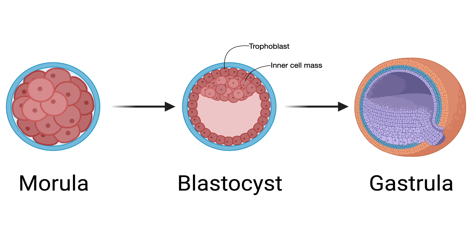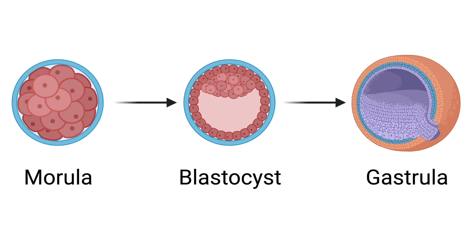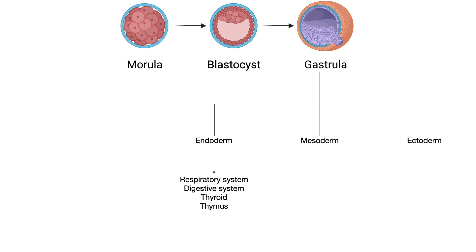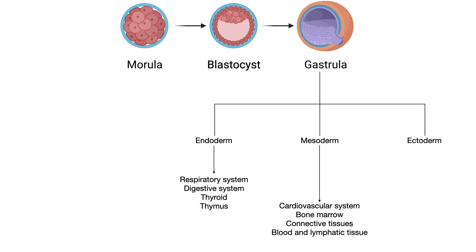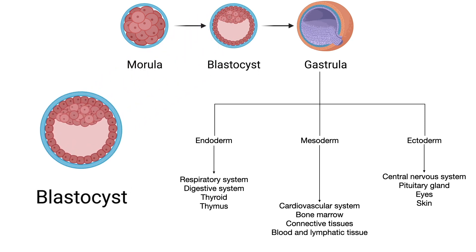The inner cell mass undergoes gastrulation and forms the gastrula with three distinct layers. The outermost layer is called the ectoderm, the middle layer is called the mesoderm, and the innermost layer is called the endoderm. These are called the germ layers and give rise to different organ systems. The endoderm gives rise to the lungs and digestive system, the mesoderm gives rise to bone marrow, bone, cartilage, heart, blood vessels, blood, and many other organs, and the ectoderm gives rise to the central nervous system, eyes, and skin. The inner cell mass of the blastocyst forms stem cells, which give rise to all these different organ types.